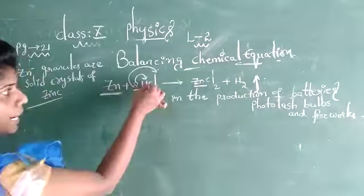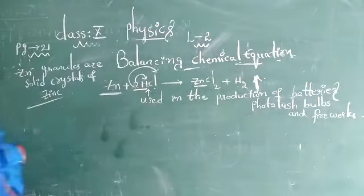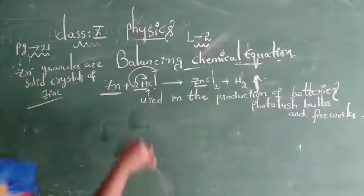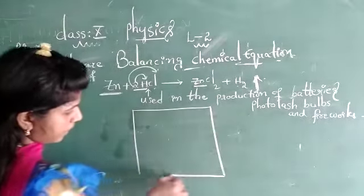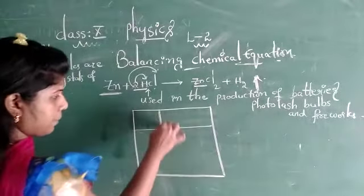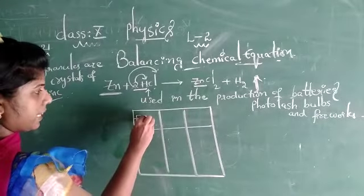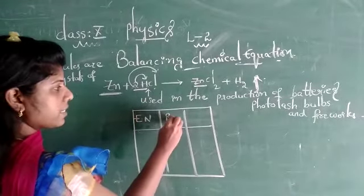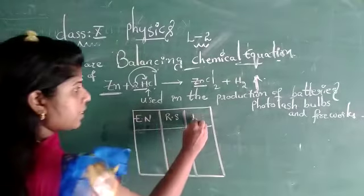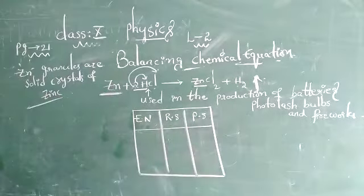Next, balance is 2 hydrogen, so here hydrogen gas is liberated. Whether it is balanced or not, we have to solve it using a tabular column. The first column is the element name, the second one is the reactant side, and the third one is the product side.